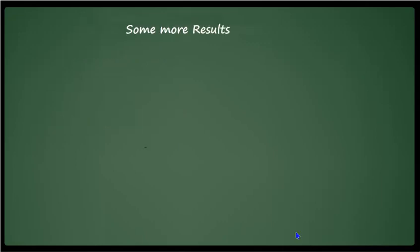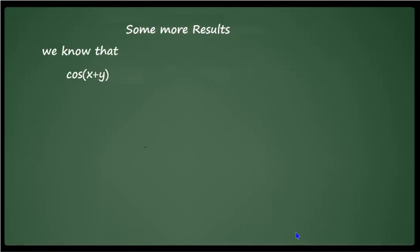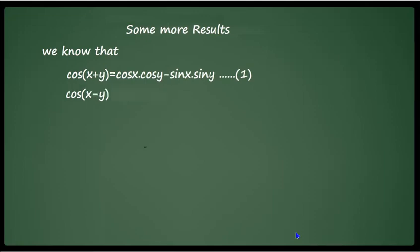Now let us continue with some more results. These results are also very important and you have to memorize them. We know the formula cos of x plus y is equal to cos x into cos y minus sin x into sin y — call this equation 1. Similarly, cos of x minus y is equal to cos x into cos y plus sin x into sin y — call this equation 2.